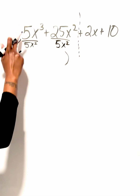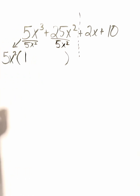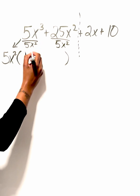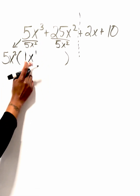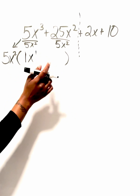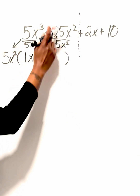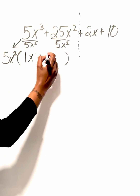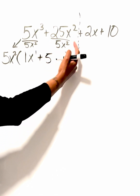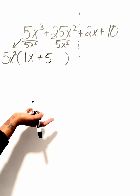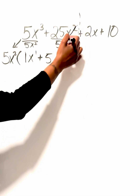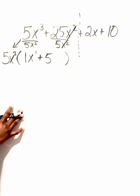5 divided by 5 gives us 1, and when dividing exponents we subtract them, so 3 minus 2 gives us x to the first power. 25 divided by 5 gives us 5. For x squared divided by x squared, 2 minus 2 gives us 0, and anything to the 0 power is 1, so those cancel out — no need to do the extra math.